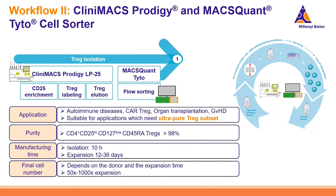Workflow 2 is based on the CliniMACS Prodigy LP25 process. First a CD25 enrichment step is performed, then the T-regs get labeled and eluted into sorting buffer, and are further sorted on the MaxQuantito cell sorter. This workflow is used in autoimmune diseases, CAR T-reg applications, organ transplantation, and graft-versus-host disease, with the aim of obtaining ultra-pure T-regs with a purity of more than 98%. The isolation process takes 10 hours, with an expansion phase of 12 to 36 days.